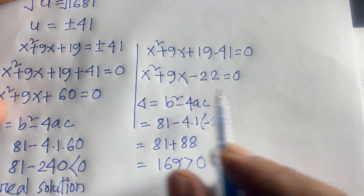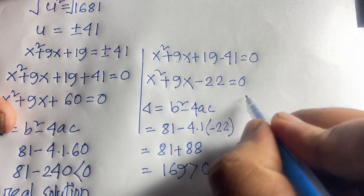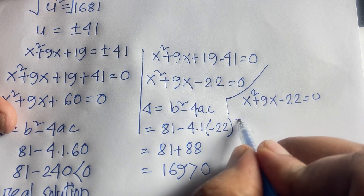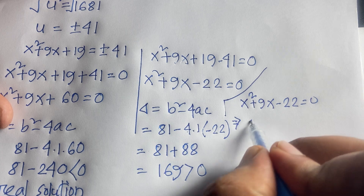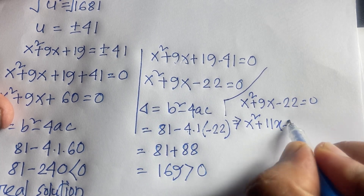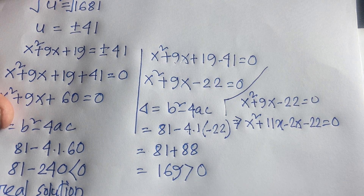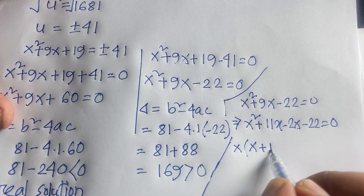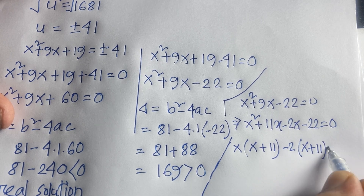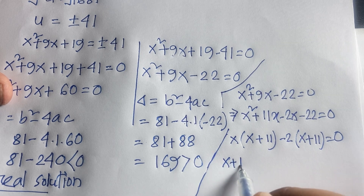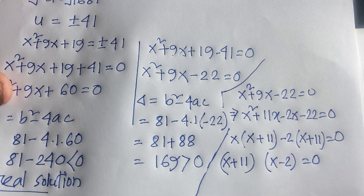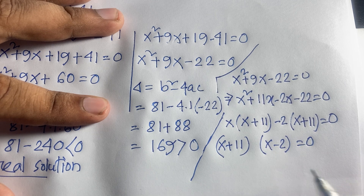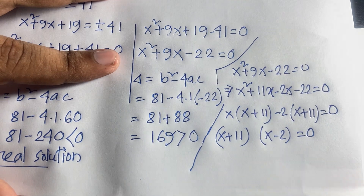Factoring x²+9x-22 = 0 using the middle-term method: x²+11x - 2x - 22 = 0, giving x(x+11) - 2(x+11) = 0, so (x+11)(x-2) = 0. Therefore x = -11 or x = 2.